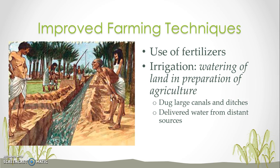They also focused a lot of their technology on farming methods to ensure they had good crops to sustain the population. They began to use fertilizers to help their crops grow, and they also developed systems of irrigation — the watering of land in preparation for agriculture. These early civilizations began to dig canals between their crops and rivers, delivering water from the rivers to their crops, so they didn't necessarily have to be right next to a river to irrigate.